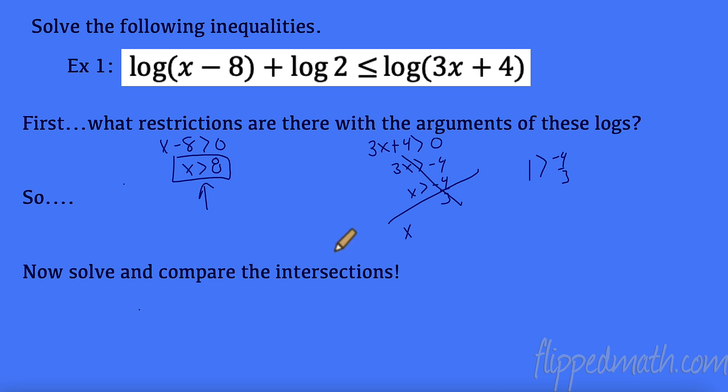All right, so let's take a look here. Let's solve it. I have logs all over the place. If you remember from last time, when I have these two logs, I can use my product property and combine them with multiplication. So I'm going to do that straight away. So now I have log of 2 times x is 2x, and 2 times negative 8 is negative 16, is less than or equal to log of 3x plus 4. And when we had logs on both sides, we could just take those and set the arguments equal to each other, right?